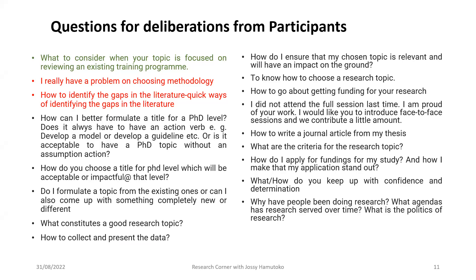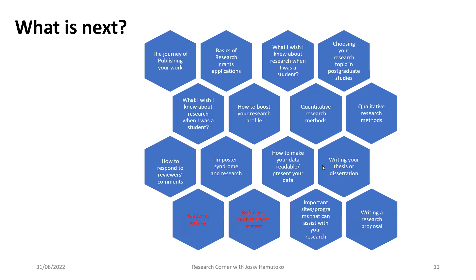At master's level you get introduced and get to understand your field better. At PhD level, you need to come up with something new — you need to bring new knowledge to your field. But in general the topic can be the same; it's just the impact. Coming up next: there will be a session on academic writing offered by one of my mentors, and then a session on reference management systems and handling research data — other tips around research on what most of us wish we knew when we were students.